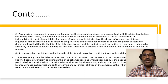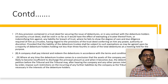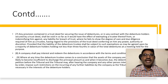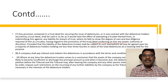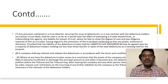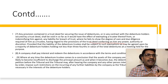Sub-clause 7: Any provision contained in the trust deed for securing the issue of debentures, or in any contract with the debenture holders secured by the trust deed, shall be void in so far as it would have the effect of exempting the trustee from or indemnifying him against any liability for breach of trust, where he fails to show the degree of care and due diligence required of him as a trustee, having regard to the provisions of the trust deed conferring him any power, authority, or discretion. The liability of debenture trustees shall be subject to exemption as may be agreed upon by a majority of debenture holders holding not less than three-fourths of the value of total debentures at a meeting held for the purpose.